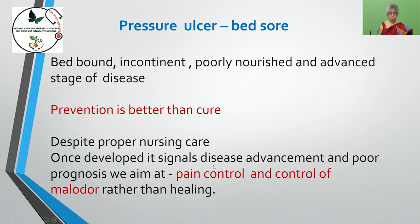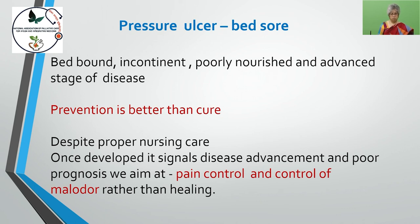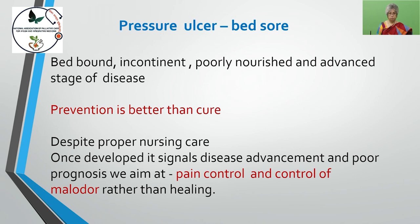Another physical problem elderly are likely to get is pressure sores, also called bed sores. These are usually found in people who are bed-bound, poorly nourished, and in advanced stages of any disease like cancer, paraplegia, or CVA stroke. Prevention is better than cure, and once developed they signal disease advancement and poor prognosis. One should do pain control, proper dressing of the bed sore, and prevention of malodour to improve healing.